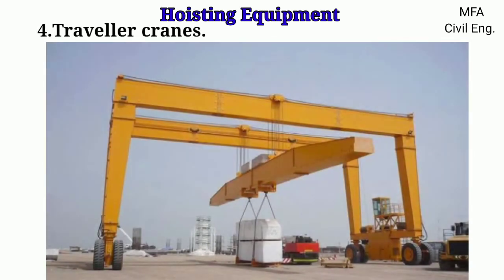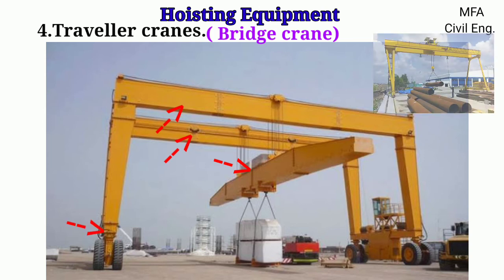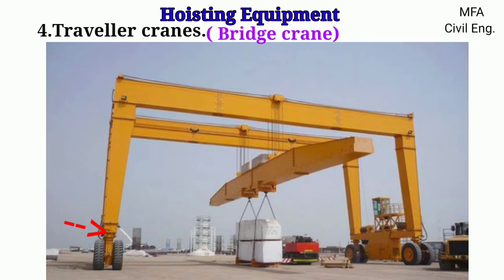Traveler cranes are also called bridge cranes. Their crabs move on girders which are supported on legs instead of an overhead gantry track as used in an overhead crane. The legs are capable of moving on a track laid on the floor.